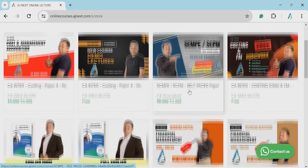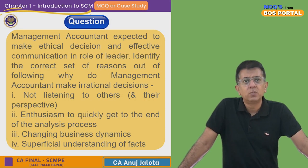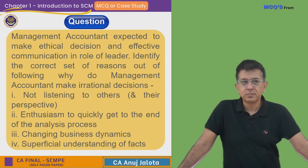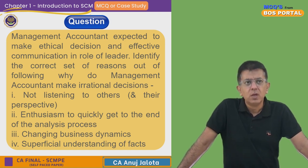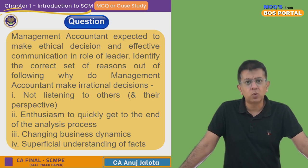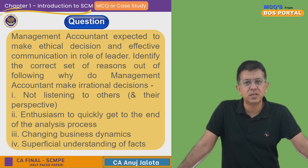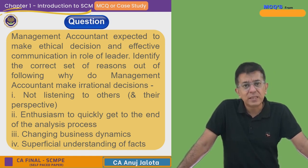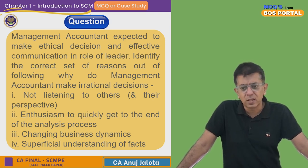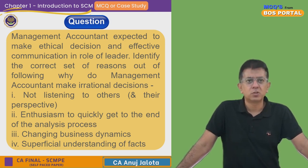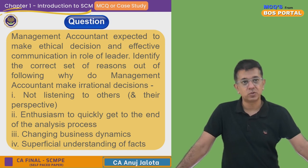Let's start with the question: a management accountant is expected to make ethical decisions and effective communication in the role of a leader. Identify the correct set of reasons why the management accountant might make irrational decisions. Management accountants are part of management but also work with accounting and forecasted data. Their role in decision-making is very significant these days.